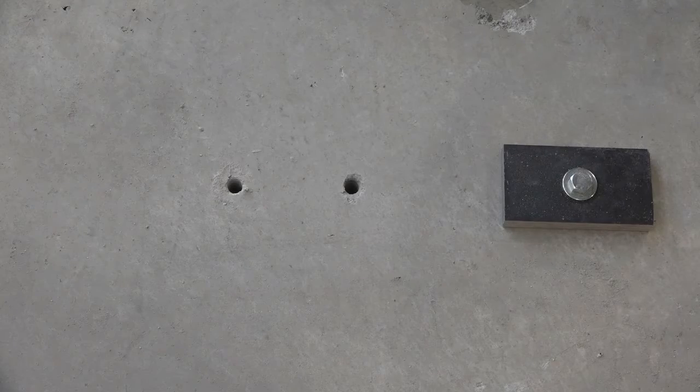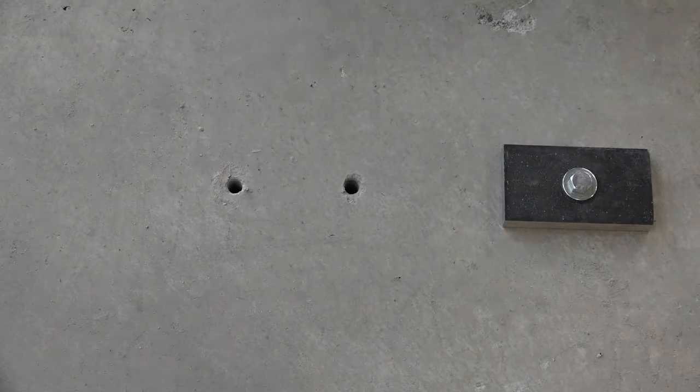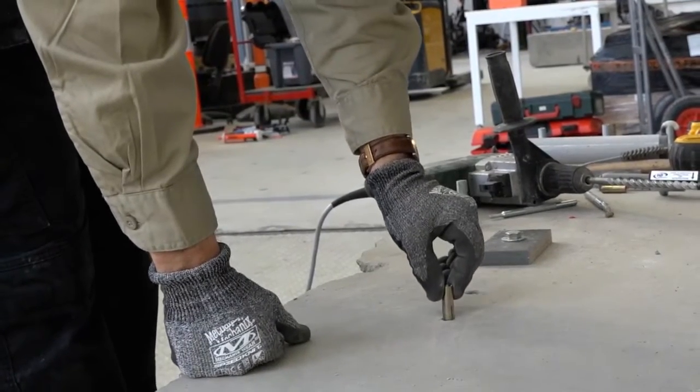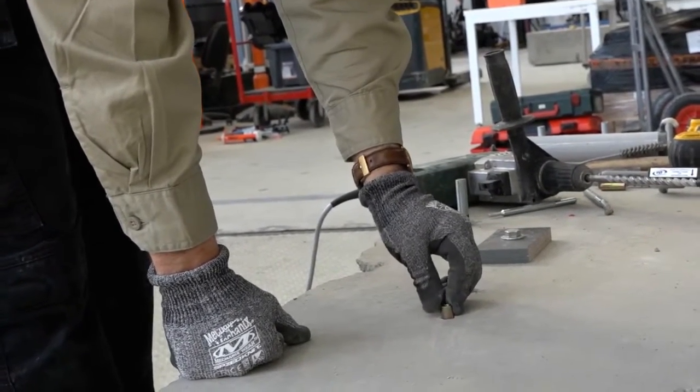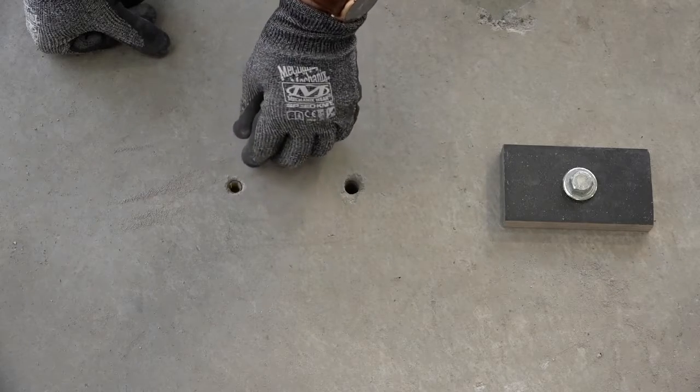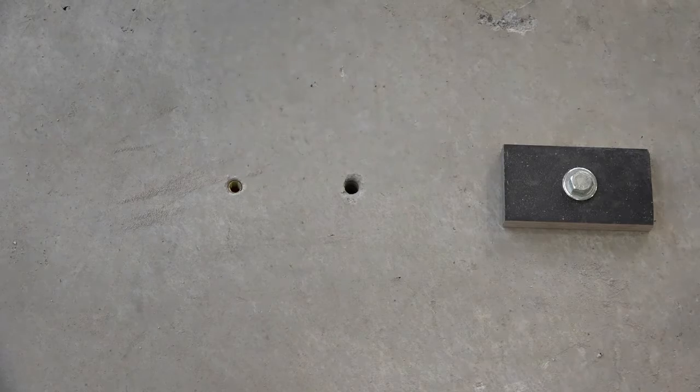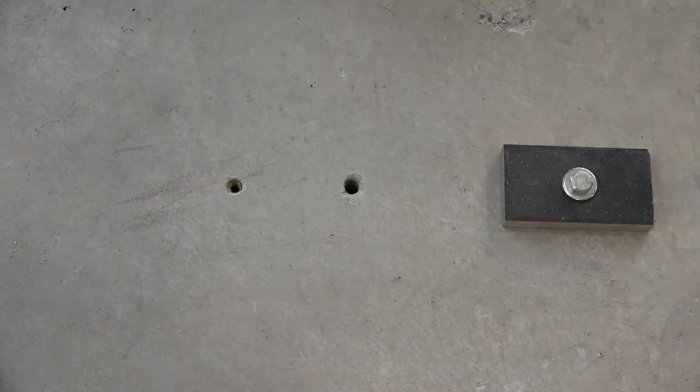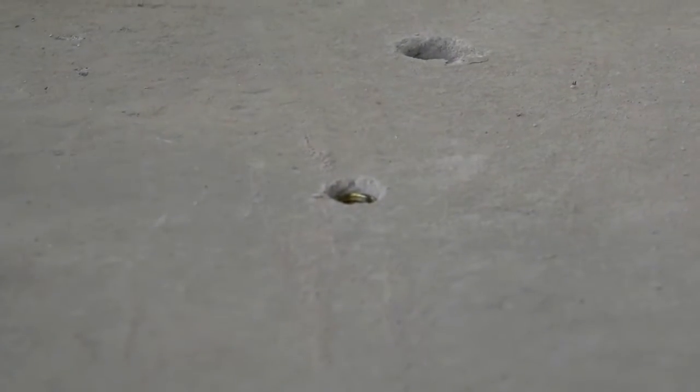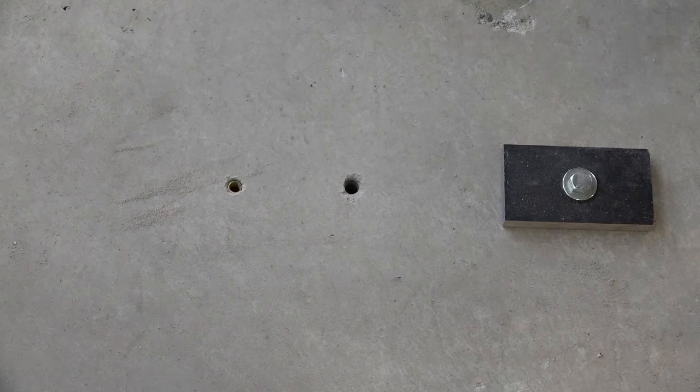Now somewhat differently to the installation of other mechanical anchors, we do the install of the drop-in anchor without the fixture in place. As you can see there, our drill hole is probably one or two mil deep. It's gone a little bit shy of the surface, but that will still be an effective set.